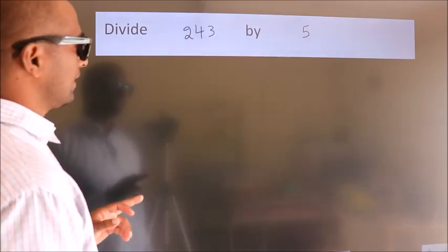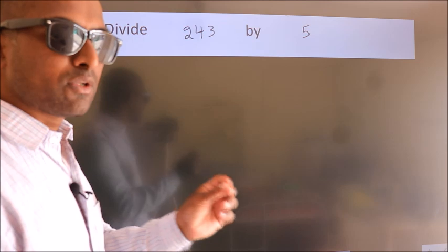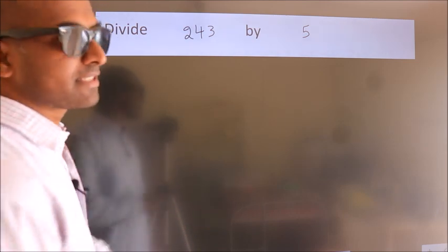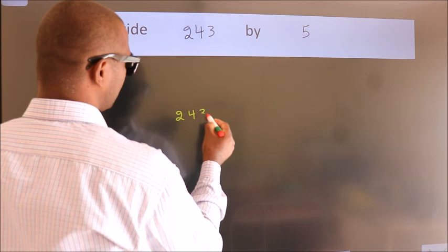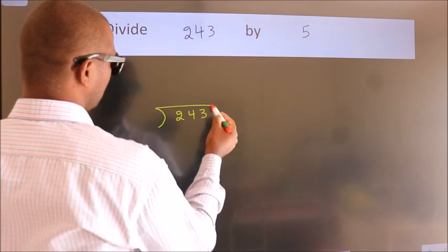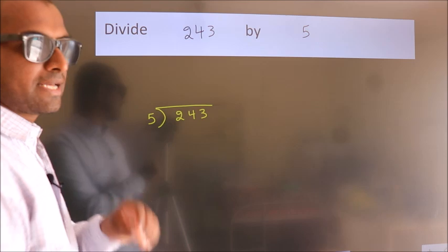Divide 243 by 5. To do this division, we should frame it in this way. 243 here, 5 here. This is your step 1.